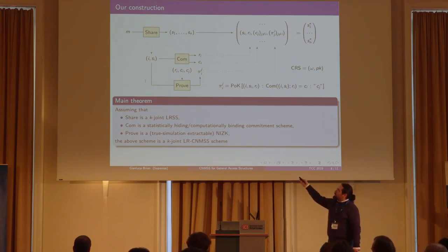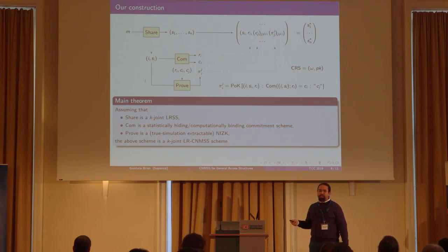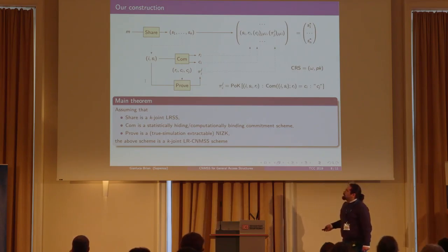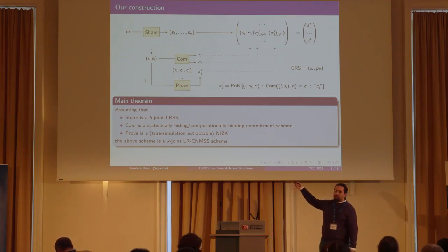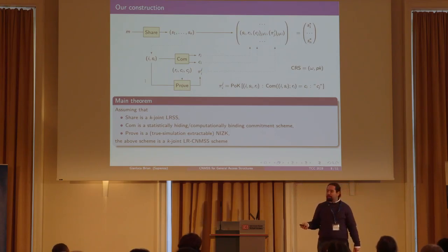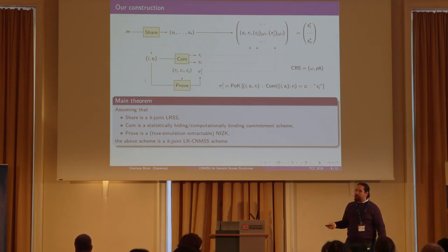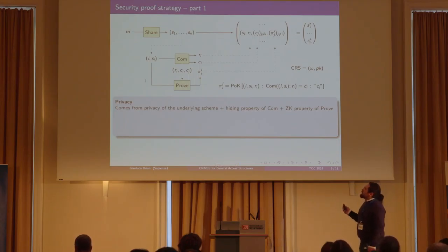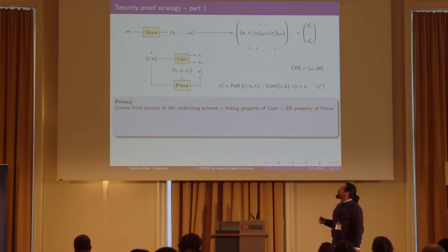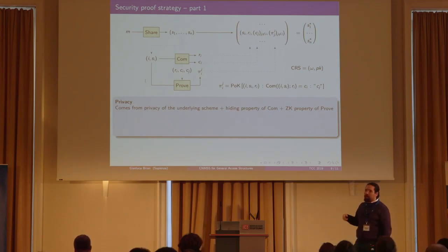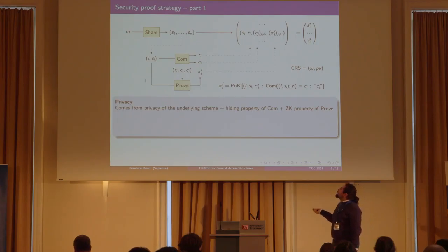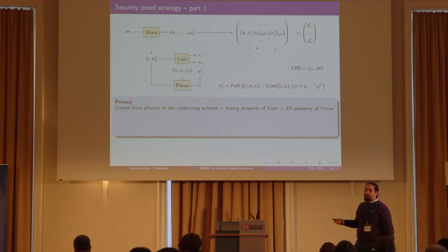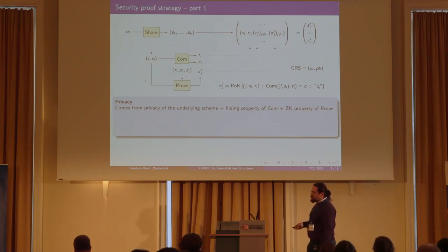A note about the share algorithm: a K-joint leakage-resilient secret sharing scheme has a similar definition to the continuous non-malleable one, but the attacker is not allowed to perform any tampering query. For the security proof strategy: privacy is quite straightforward, coming from the privacy of the underlying secret sharing scheme, plus the hiding property of the commitment scheme and the zero-knowledge property of the proof algorithm.